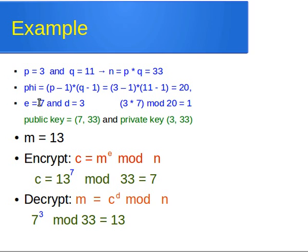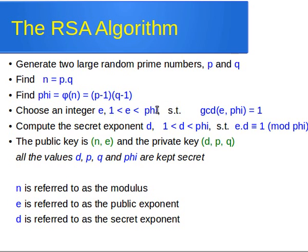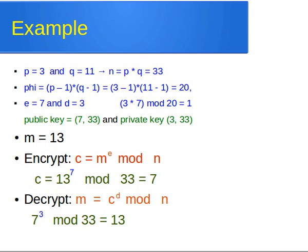We choose the value of D such that it is larger than 1, less than phi, and E × D mod phi = 1. This means if we divide E × D by phi, the remainder is 1. With E = 7 and D = 3: E × D = 21, and 21 mod 20 = 1. So that condition is met.